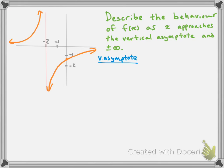Our vertical asymptote is at x = -2, and x can approach -2 from the left side or from the right side, giving two different answers. To indicate approaching from the left, we write x → -2 with a minus superscript. To indicate approaching from the right, we use a plus superscript: x → -2⁺.